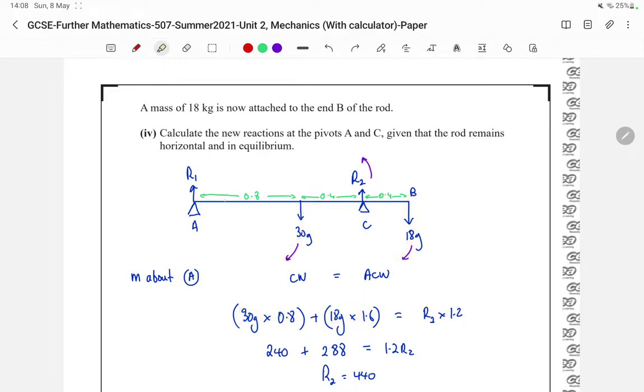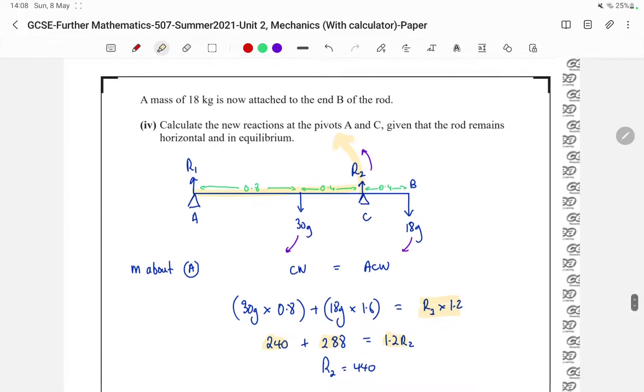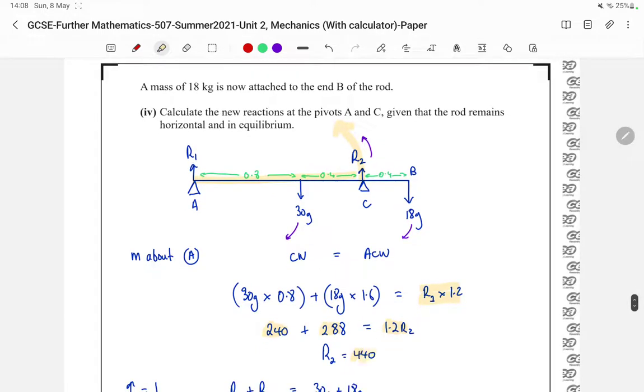Our anticlockwise moment, there's only one, is our R2 acting at a distance of 1.2. So R2 is what we're looking to find out. Multiplying everything out here gives us 1.2 times the reaction at R2. So R2 is therefore 440.